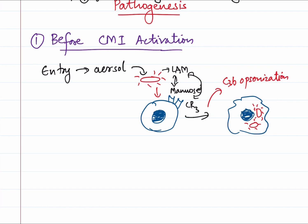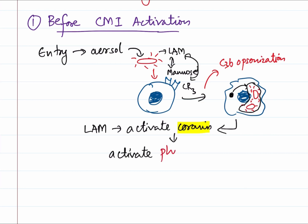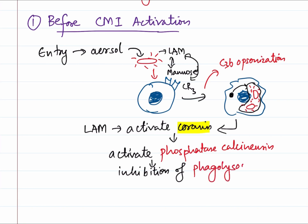Now what happens after engulfment? Usually lysosomes fuse with the phagosome to kill the mycobacterium. But what happens is that the Lipoarabinomannan present in the cell wall of Mycobacterium activates coronins - a host protein - and the coronin will activate phosphatase calcineurin. This calcineurin will inhibit the fusion of phagosome with lysosome, thereby inhibiting phagolysosome formation. As a result, the Mycobacterium tuberculosis does not get killed and hence will proliferate.